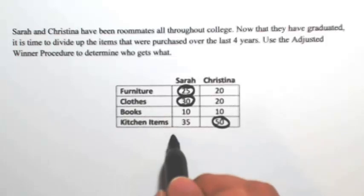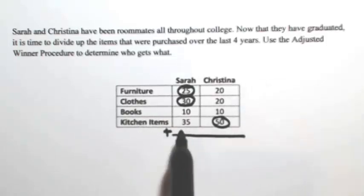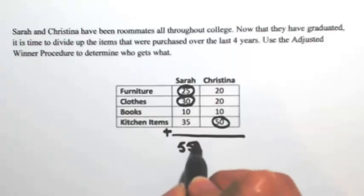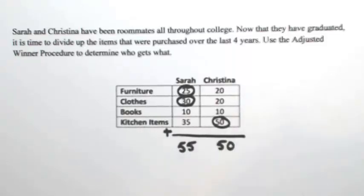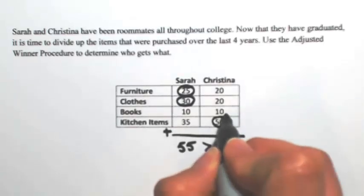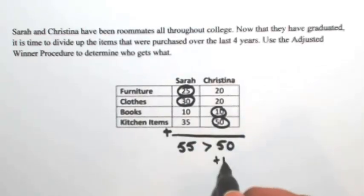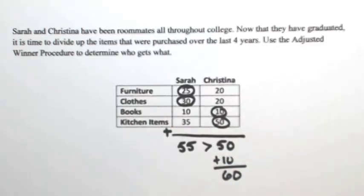So all together, if I were to add all this up, Sarah would have 55 points and Christina would have 50. So at this point, it is not fair because Sarah has more points than Christina. So the tie is going to temporarily go to Christina. But now Christina has more points.